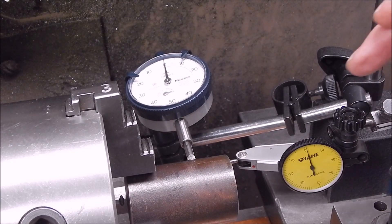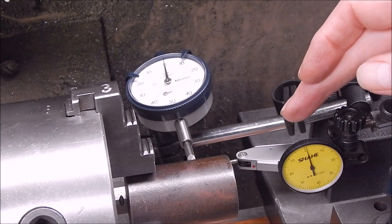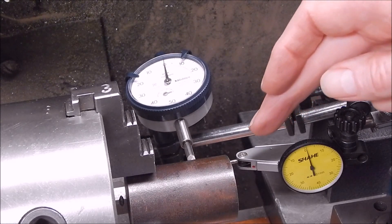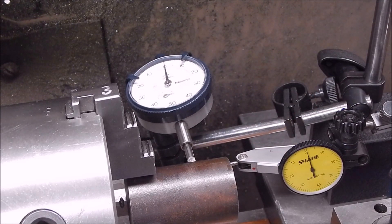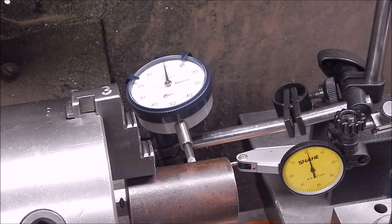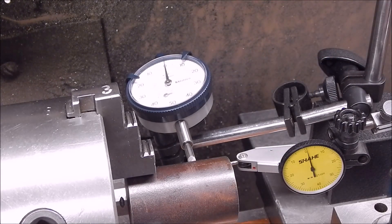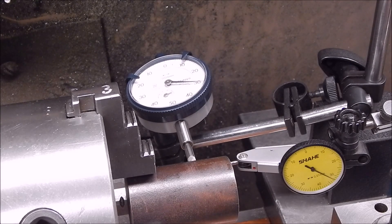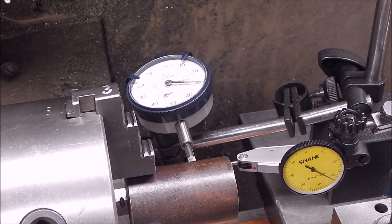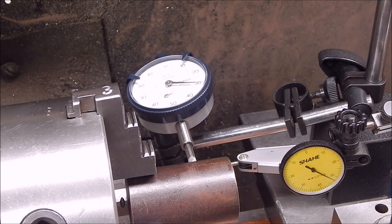Okay, first off we'll take a reading with the Mitutoyo and the Shae test indicator. With the Shae set up the way it should be set up and that is with the probe as parallel as possible to the face of the job. And that's pretty good. I've got it in pretty close. So we'll advance the Mitutoyo up to 0.3 and we'll see what the Shae shows. So the Mitutoyo is at 0.3 and the Shae is at 0.315. So there's a difference.